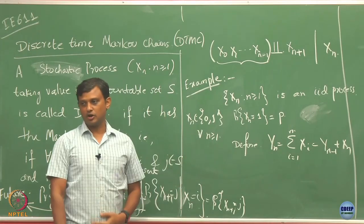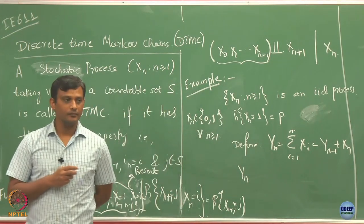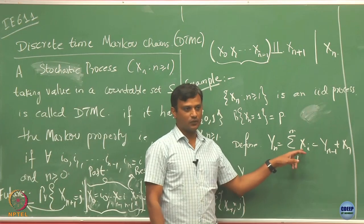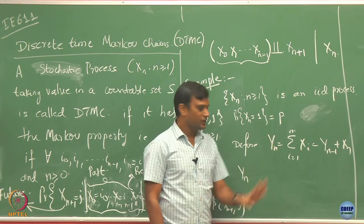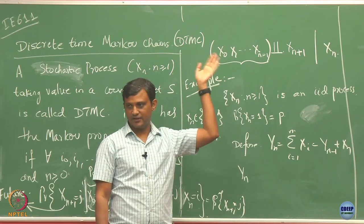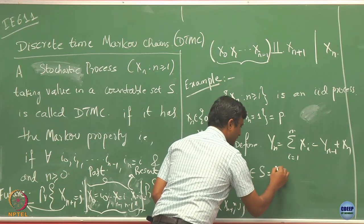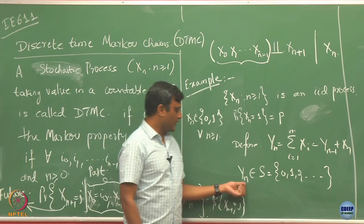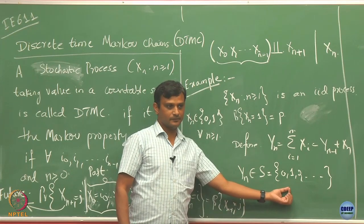Let us check whether Yn satisfies the Markov property. Each Xi takes value 0 or 1, so Yn can take values from 0 to n. As n goes to infinity, Yn belongs to S = {0, 1, 2, ...}. So Yn takes values in a countable state space.